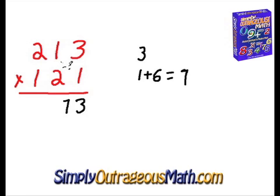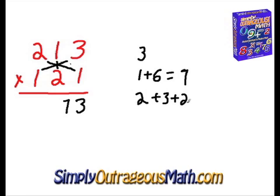Our next step is to multiply: two times one is two, one times three equals three, and one times two equals two. We add those together — that's two plus three plus two, which is seven. So we have seven as our third number there.